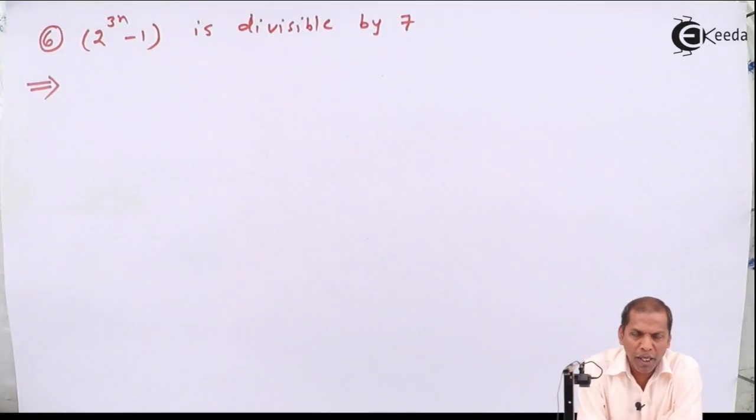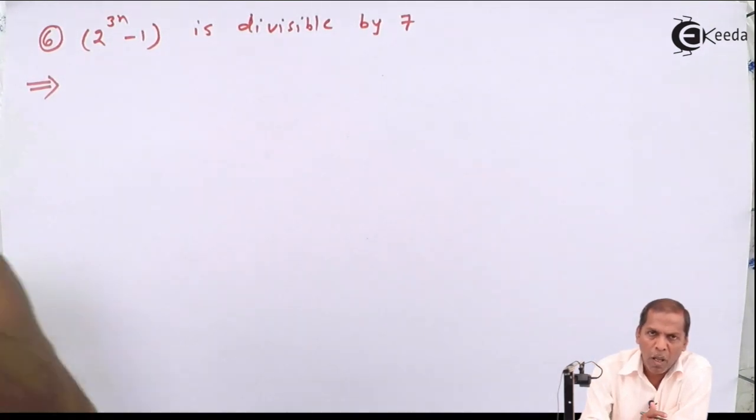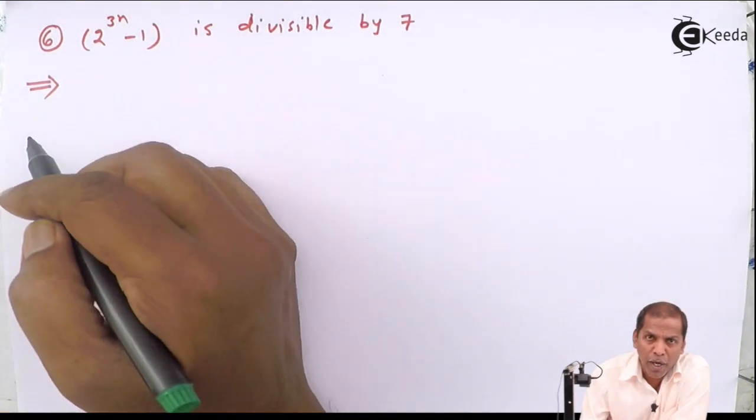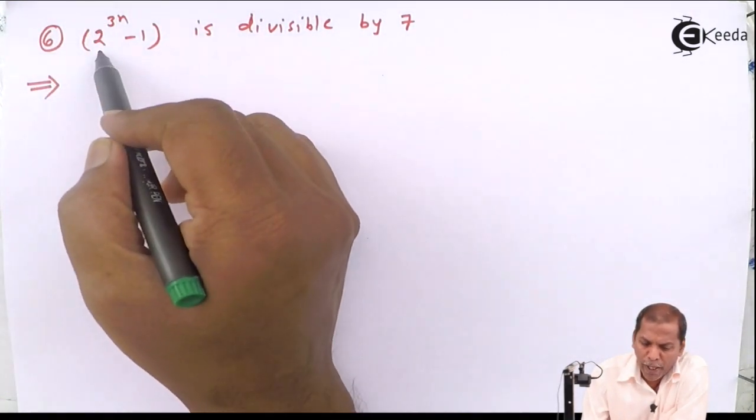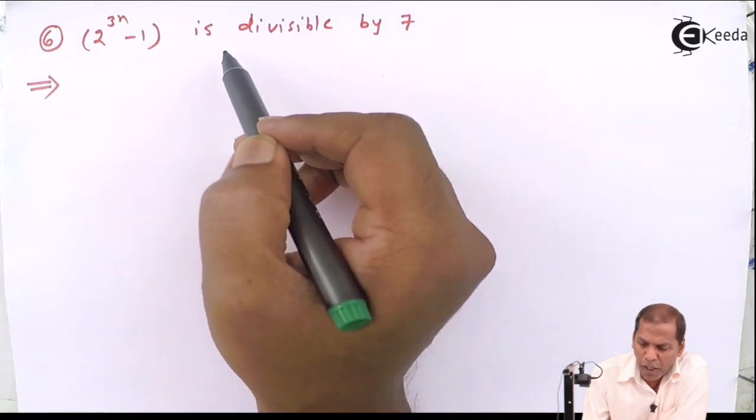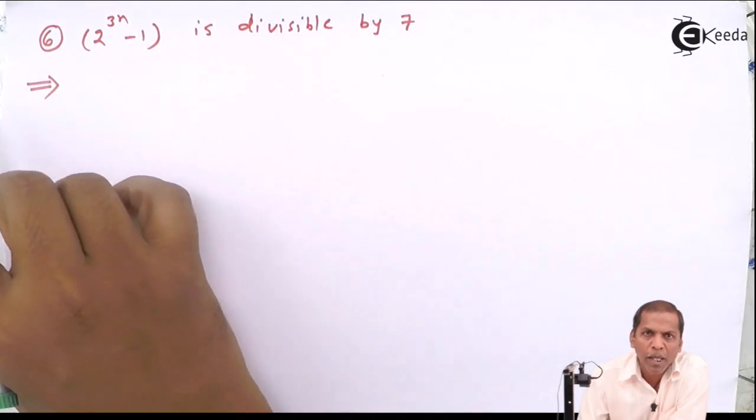Hello friends, now we see problem number 6 which is based on principle of mathematical induction of chapter method of induction and binomial theorem. The problem is to prove that 2 raised to 3n minus 1 is divisible by 7.